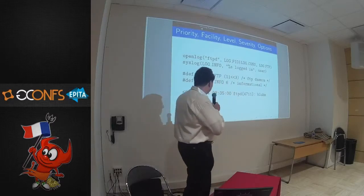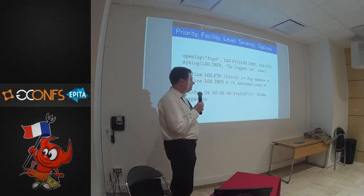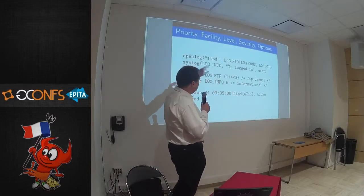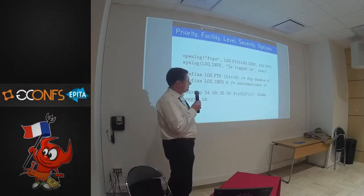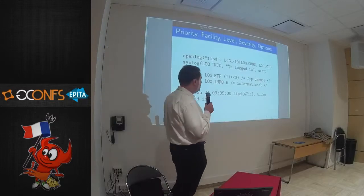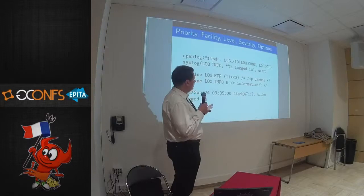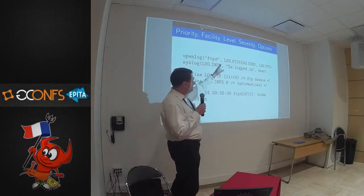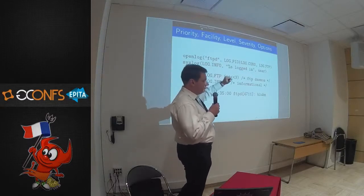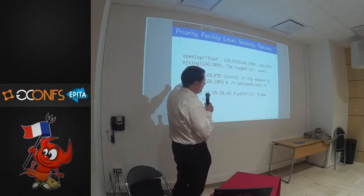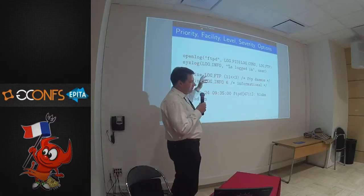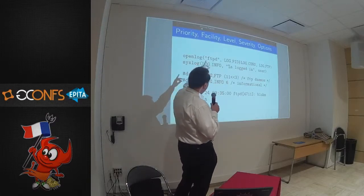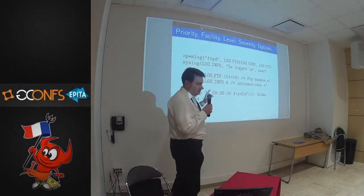Now let's look into the details of how that works. We have some priorities, facilities, levels, severities, and options we can pass. There the first confusion starts. The man page speaks of level. The RFC calls it severity. The header file calls it priority — while the RFC means the combined thing between severity and facility is the priority.